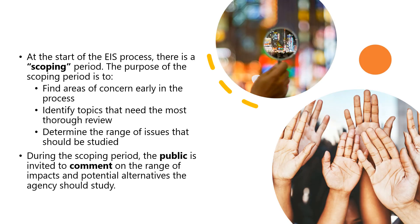At the start of the EIS process there is a scoping period. The purpose of the scoping period is to find areas of concern early in the process, identify topics that need the most thorough review, and determine the range of issues that should be studied. During the scoping period, the public is invited to comment on the range of impacts and potential alternatives the agency should study.